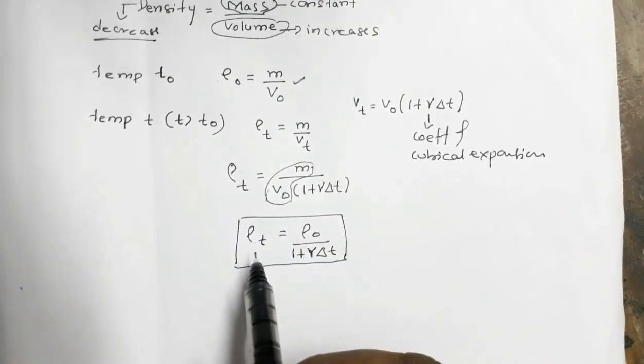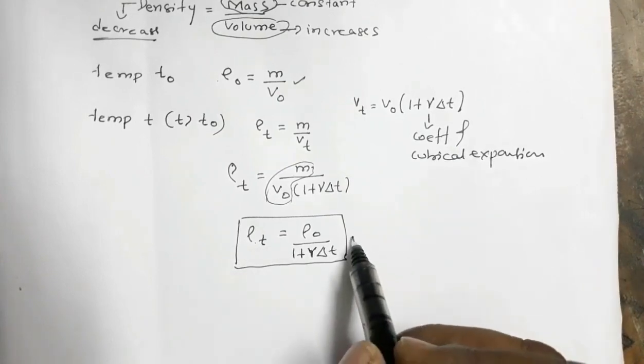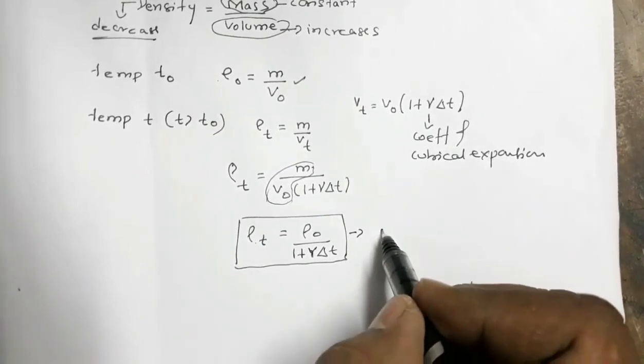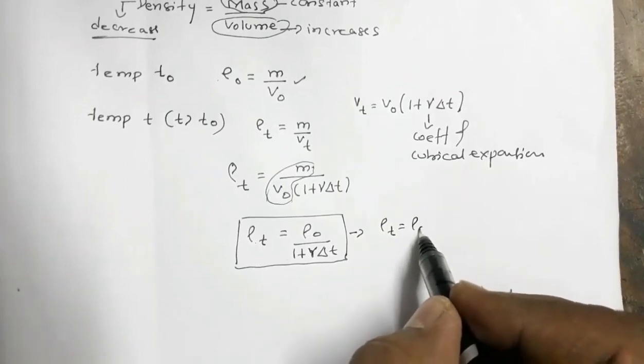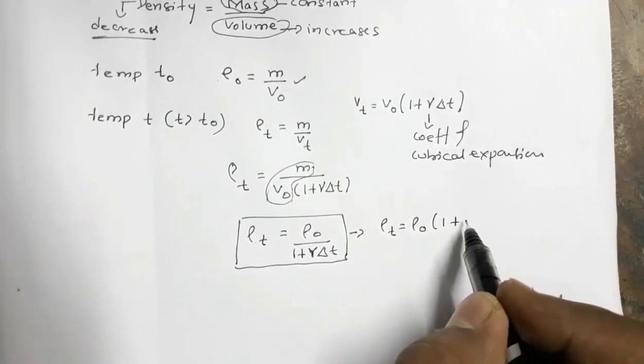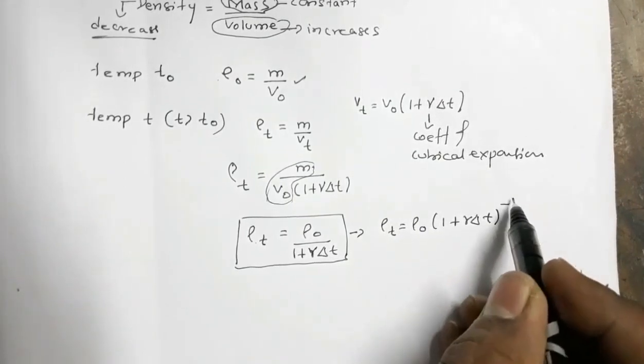So this is the relation showing the variation of density with temperature. Now this relation can also be written as ρT is equal to ρ0 times 1 plus gamma delta T raised to the power minus 1.